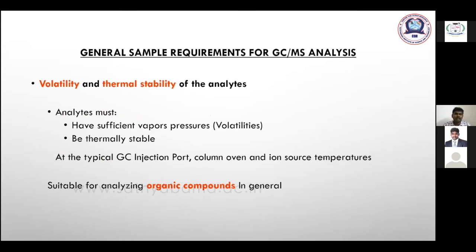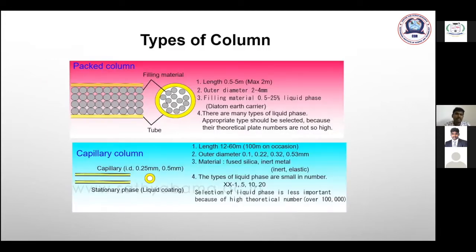General sample requirements for GC-MS analysis: the sample should be volatile and thermally stable. The analyte must have sufficient vapor pressure and thermal stability because in GC-MS the injection port, column, and ion source are all maintained at different temperatures. GC-MS is suitable for analyzing organic compounds. Nowadays everyone uses capillary columns rather than packed columns, with different lengths available, coated with stationary phase liquid having different combinations.